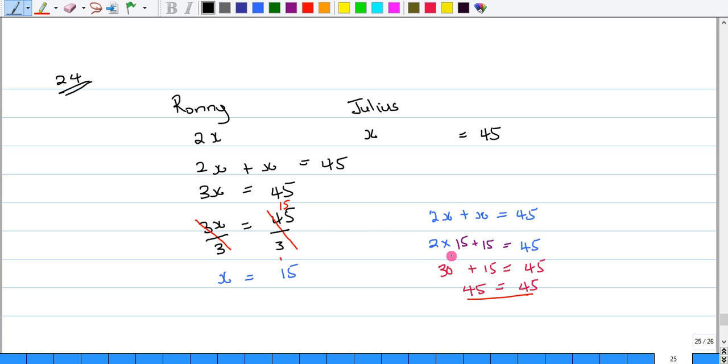Remember the PEMDAS rules here. I would need to multiply before I add. So that's how we got 2 times 15 giving me 30. Remember, please excuse my dear Aunt Sally. PEMDAS, order of operations. So that helps us to solve right here properly so that we could get 45 on the left-hand side and 45 on the right-hand side.